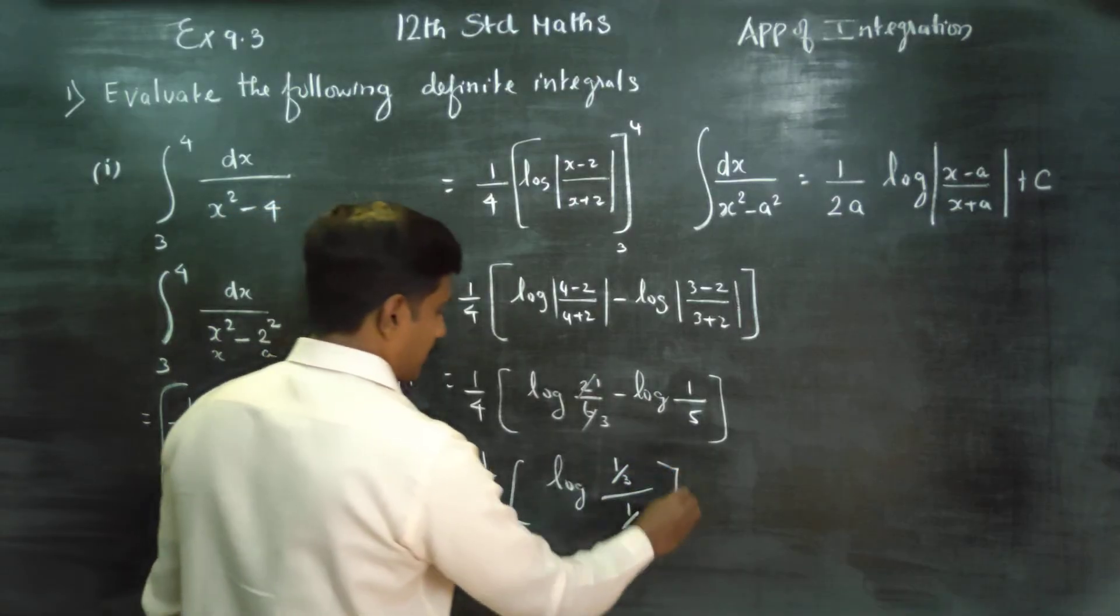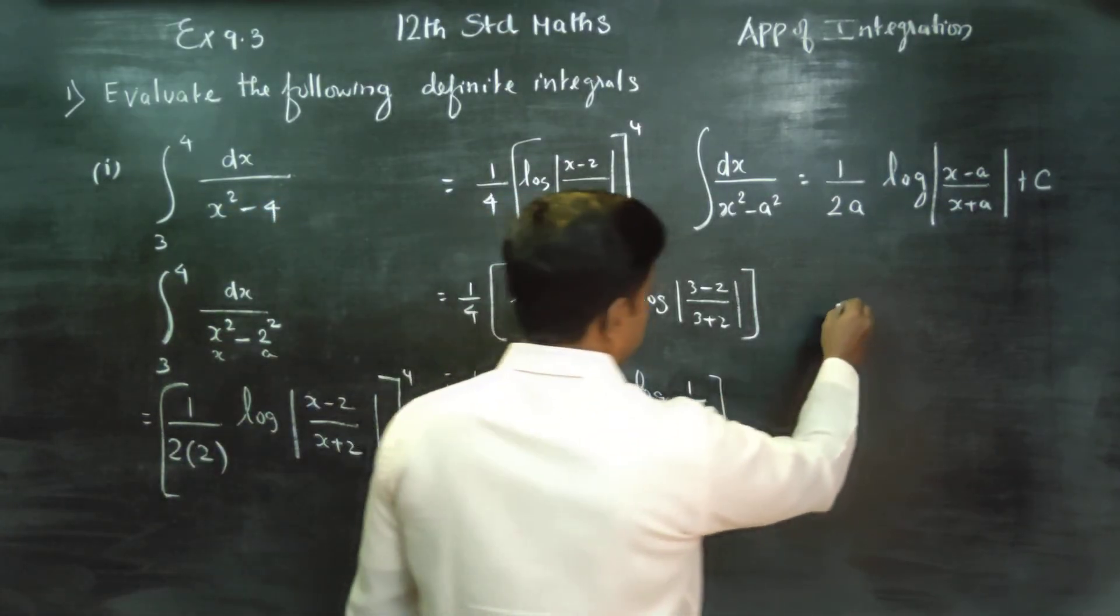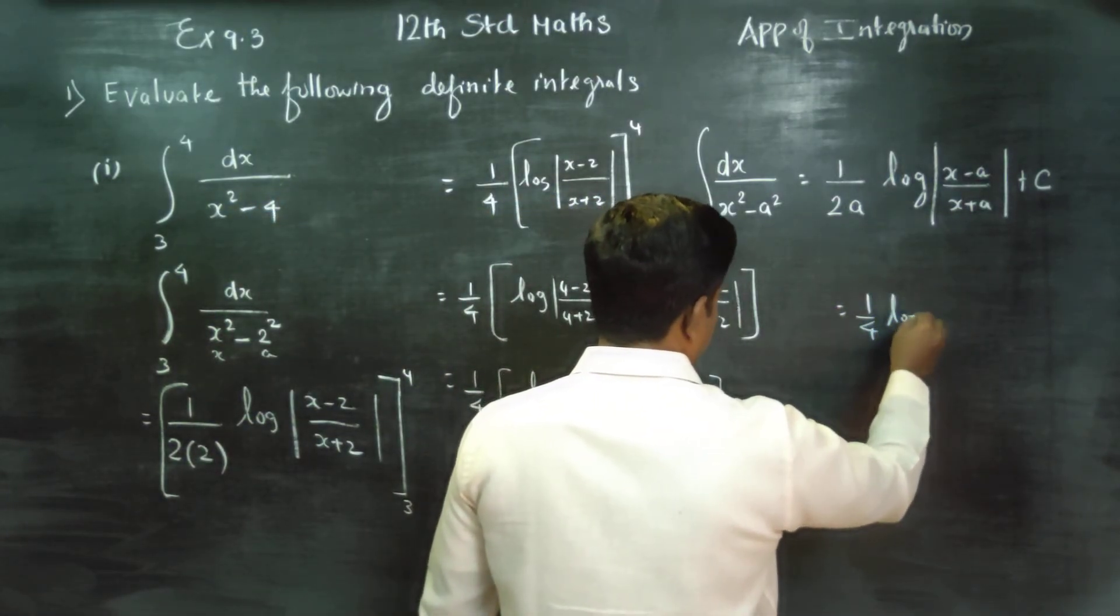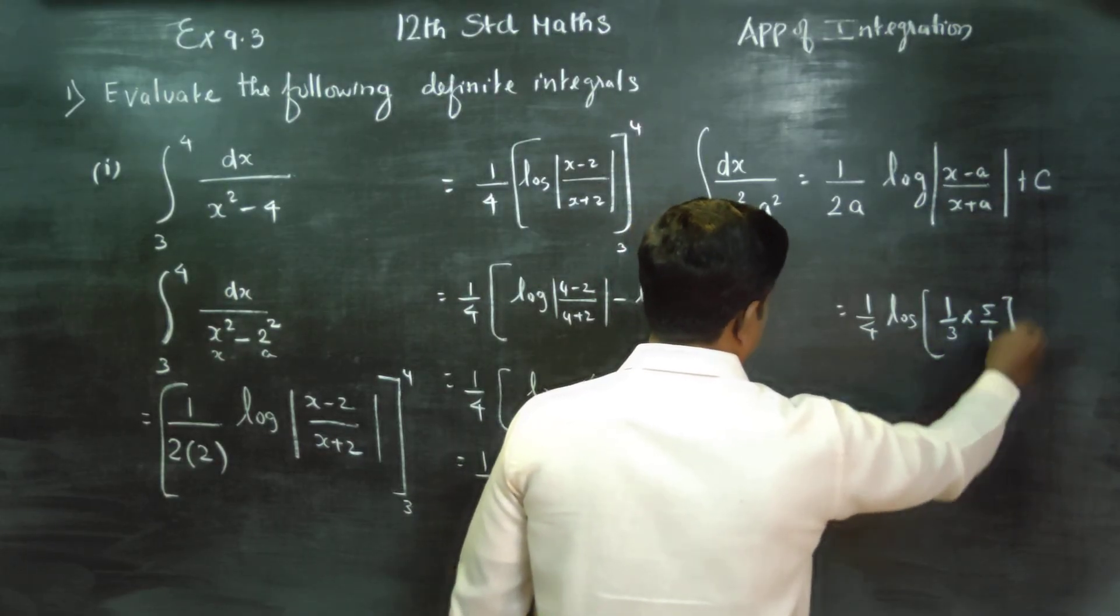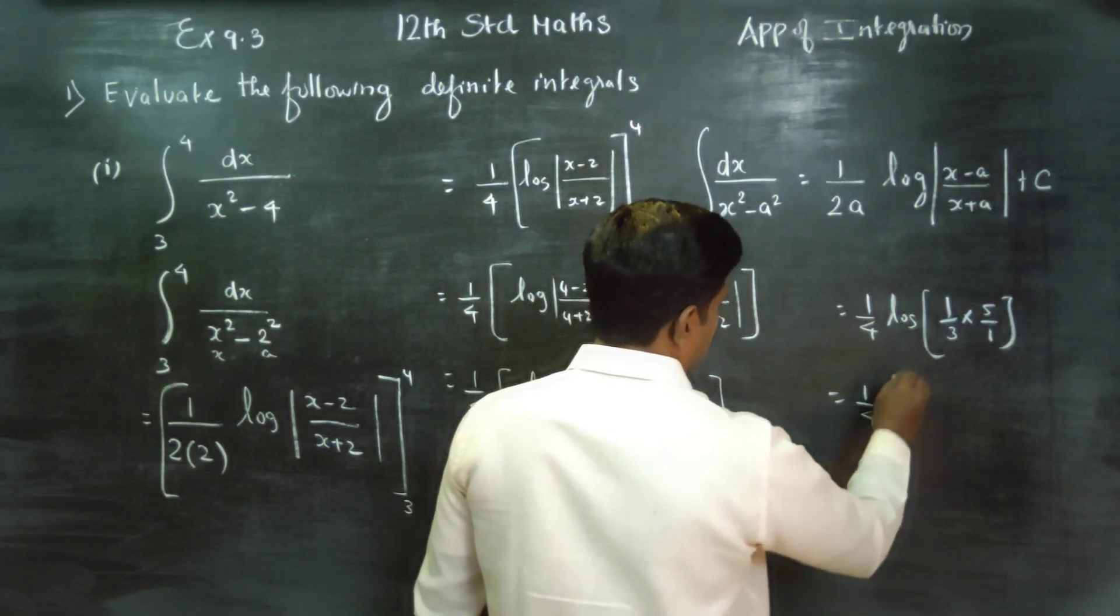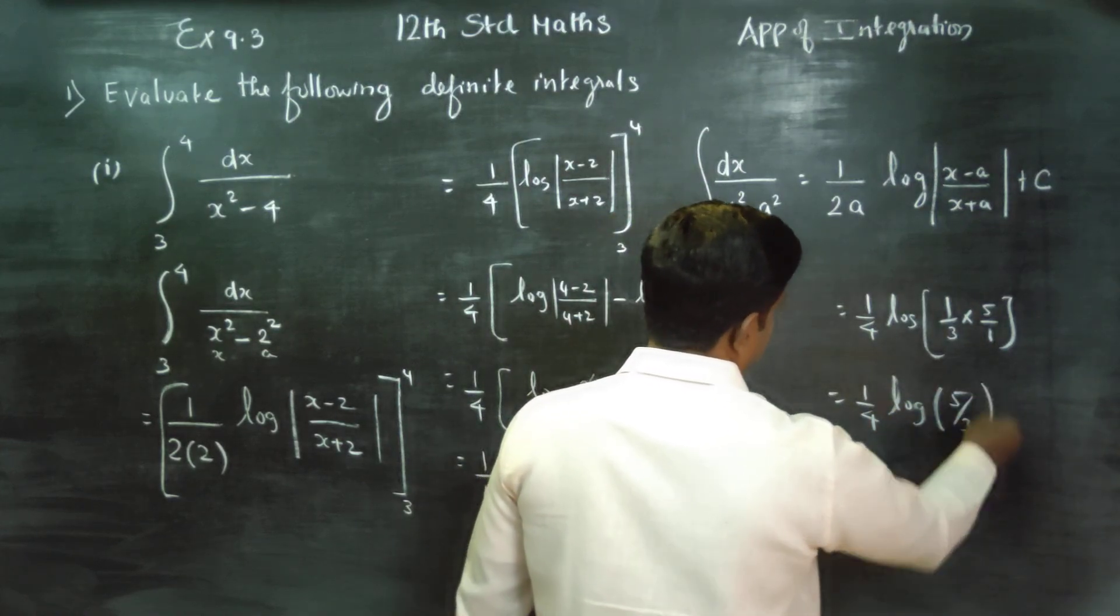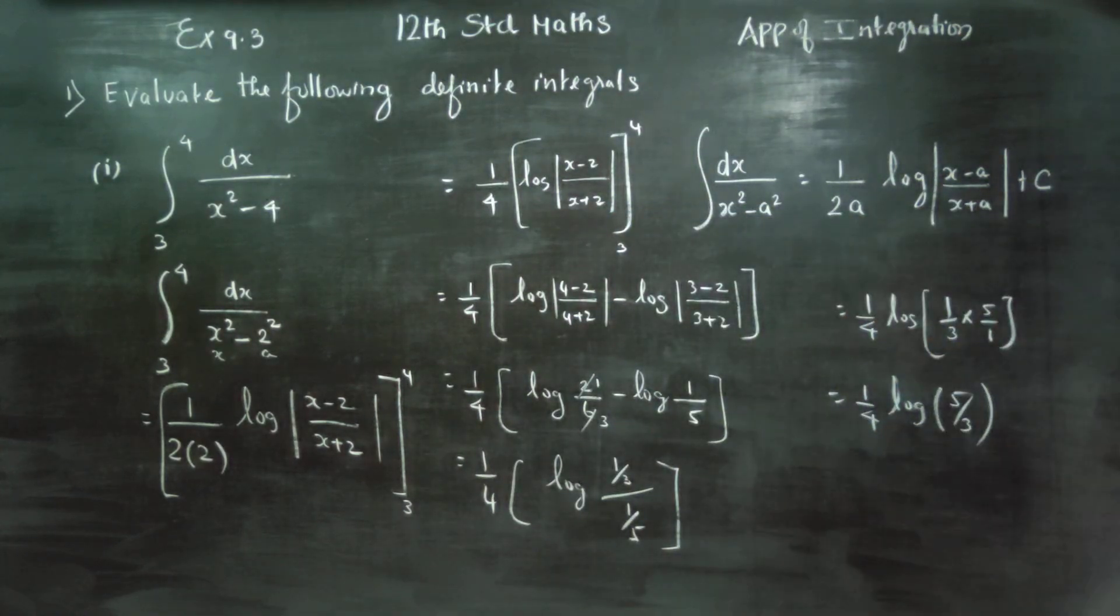1 by 4 logarithm of 1 by 3 into 5 by 1. Your final answer will be 1 by 4 log 5 by 3. This is your final answer.